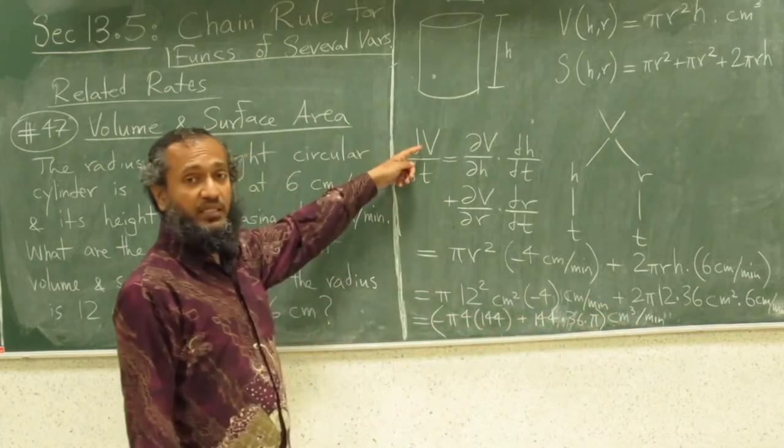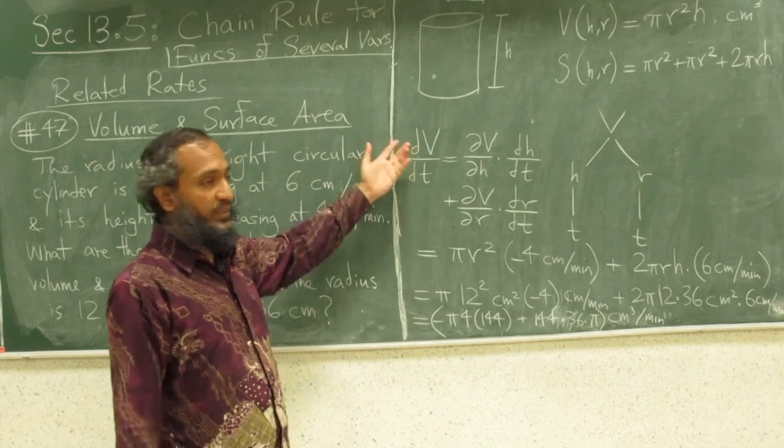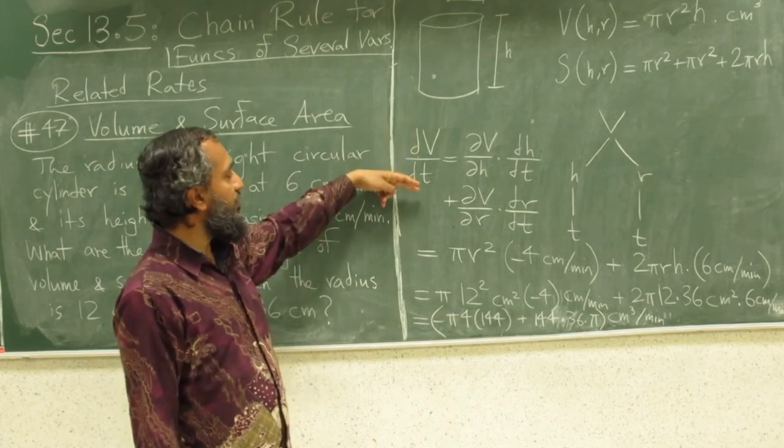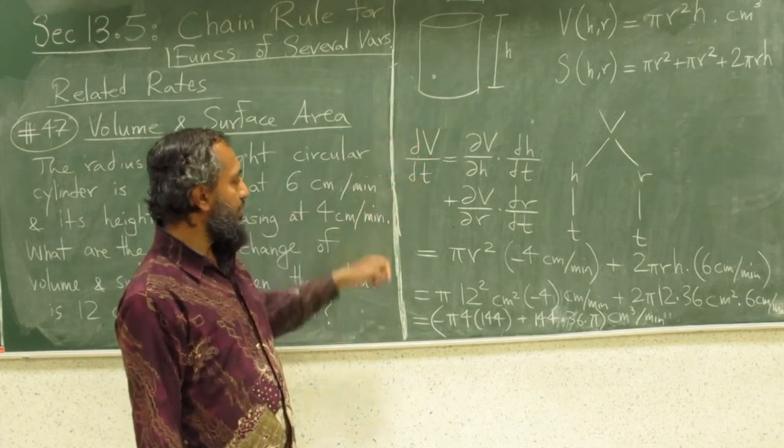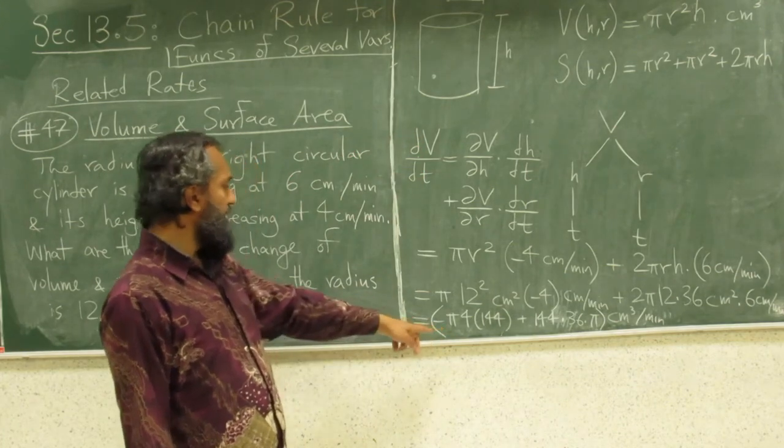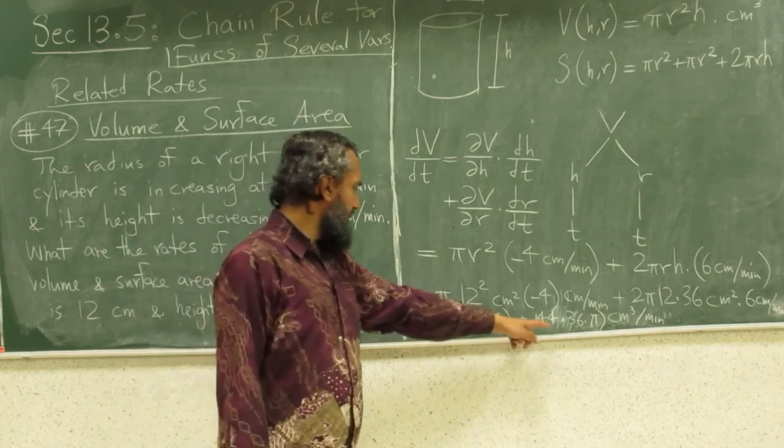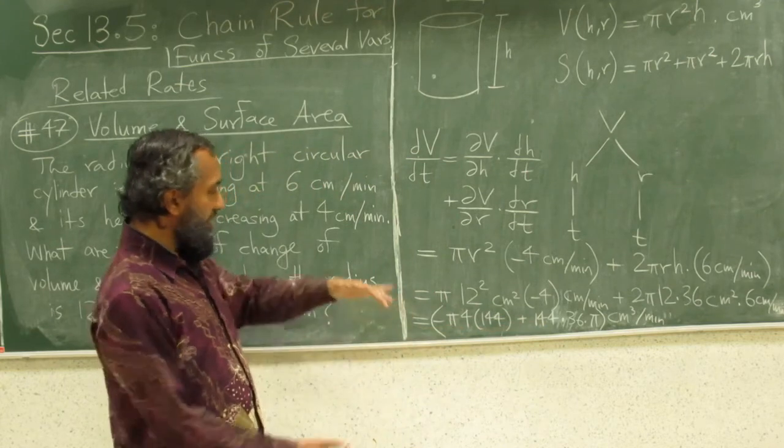That makes sense because we're doing dv/dt. The rate of change of volume obviously should be the unit of volume over the unit of time, centimeter cubed per minute. And it looks like it will be a positive number in this case because the height is quite thick.